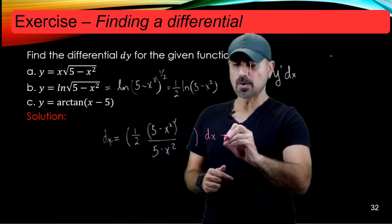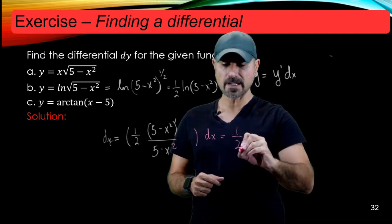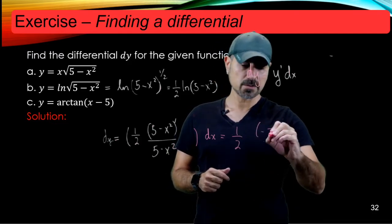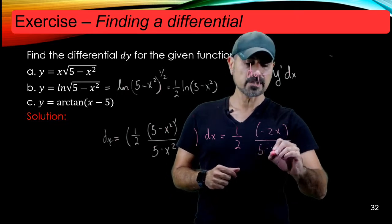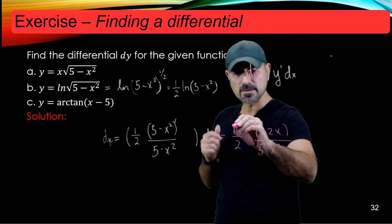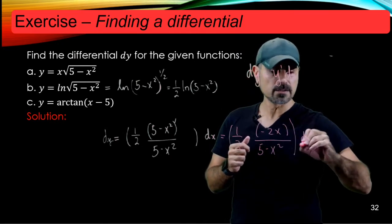So what is the derivative of 5 minus x squared? So that's negative 2x, right, divided by 5 minus x squared. And this is all multiplied by dx.